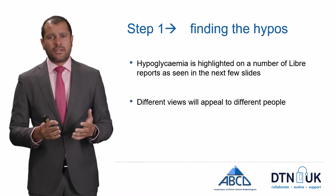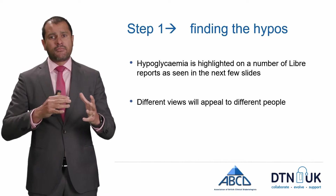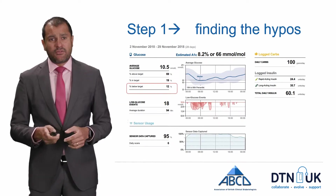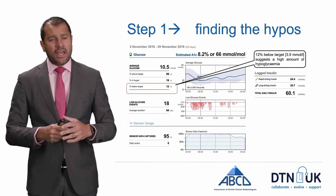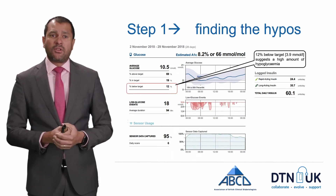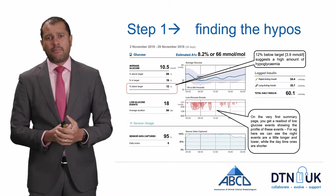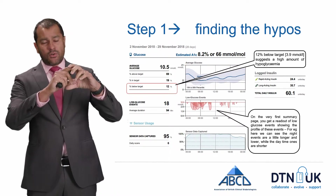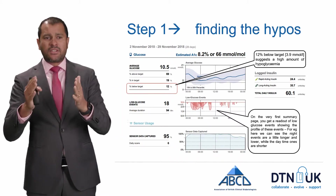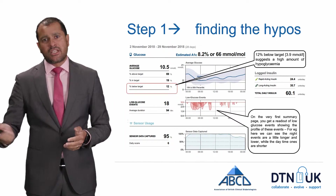Once we know what we're looking for, the first step is to find where the hypos appear on the download. Different views appeal to different people. The front page of the report will tell you the percentage of readings below hypoglycemia thresholds — this particular individual has 12% of readings below four, which suggests a lot of hypoglycemia. The second report gives a picture of when in the day they're happening: you can see that overnight there are a lot more hypoglycemia events whereas in the day there are very few red dots.